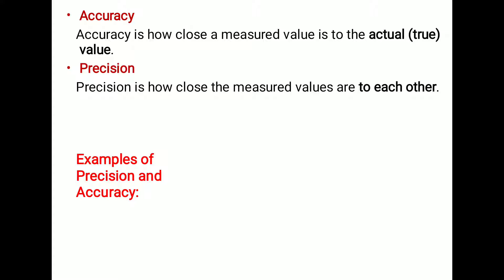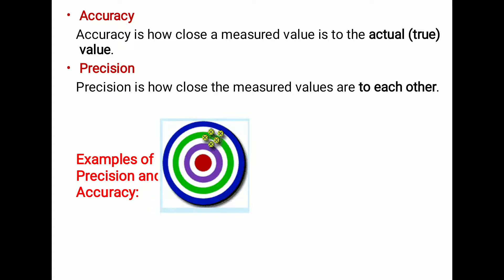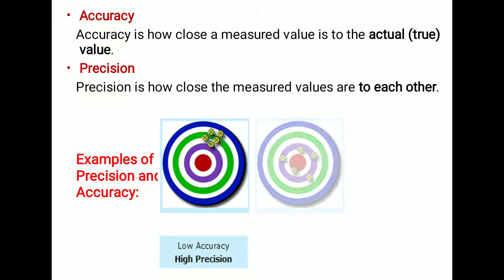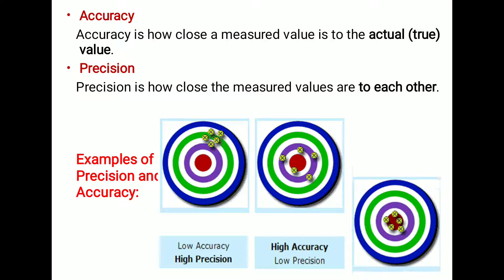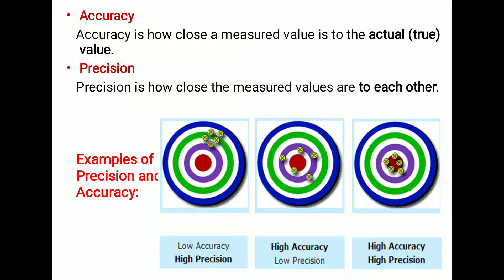Accuracy is how close a measured value is to the actual value, whereas precision is how close the measured values are to each other and to the mean value. In the diagram shown, the first figure illustrates low accuracy and high precision: the target is the center of the circle, but the readings do not hit the center. However, all the targeted values are near to each other, hence high precision but low accuracy.